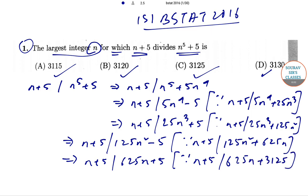So basically this comes down to n+5 dividing 625n+3125.